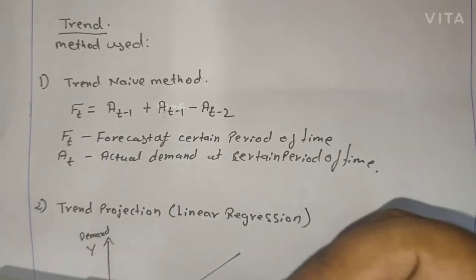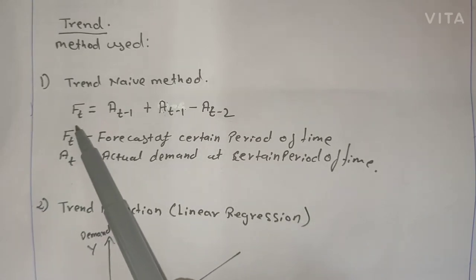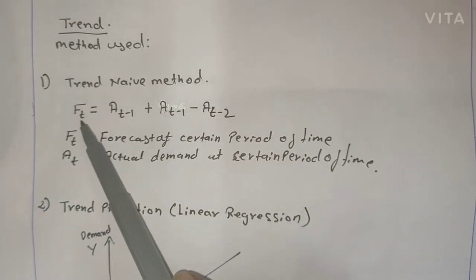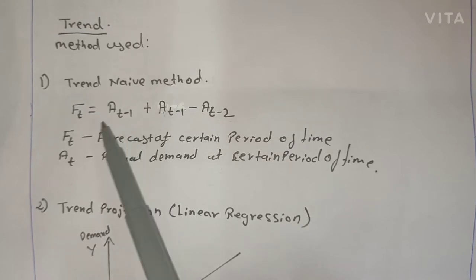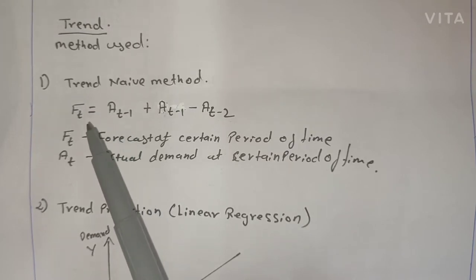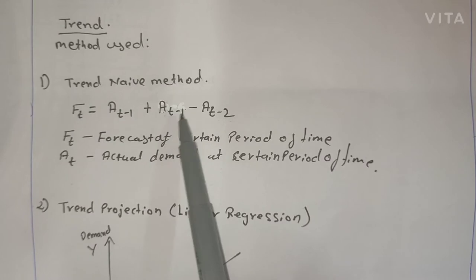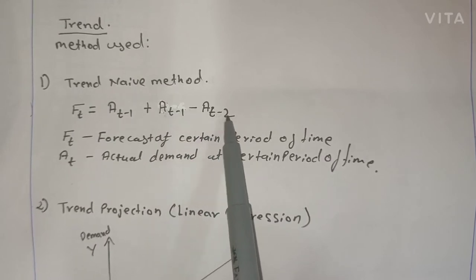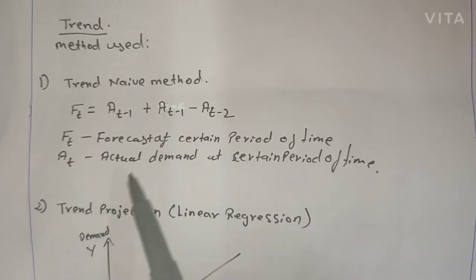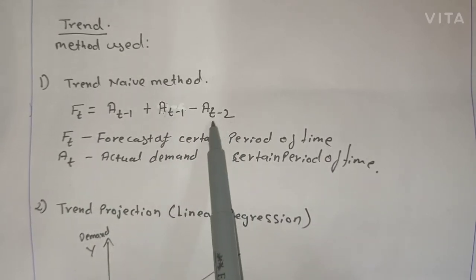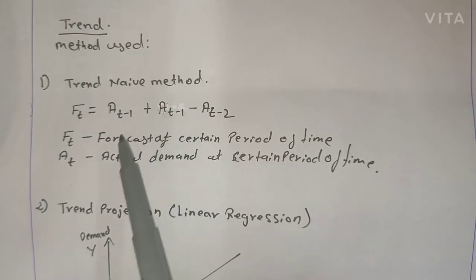For example, if you want to find the forecast for March, then a(t-1) will be the actual of February, and a(t-2) will be the actual of January. So you require at least two months before the target period to find the trend naive forecast.